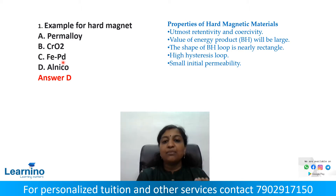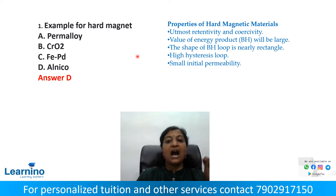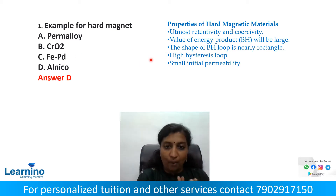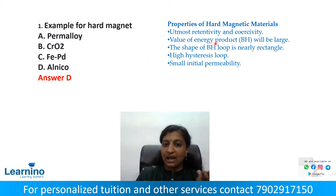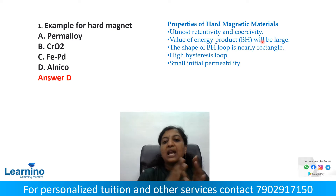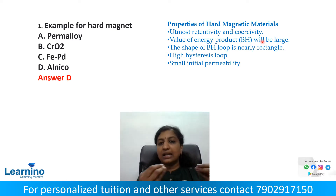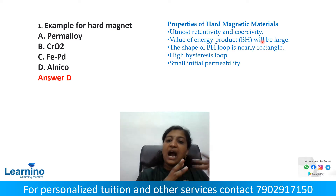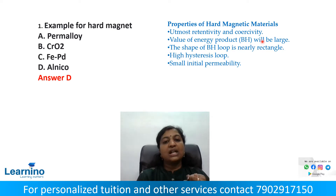What is a Hard Magnet? Hard Magnetic Materials have the following properties: high retentivity, high coercivity, and a high value of the energy product BH — a large BH value. The hysteresis loop is nearly rectangular in shape, and there is small initial permeability.